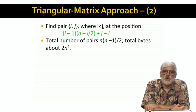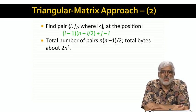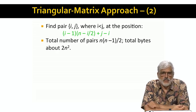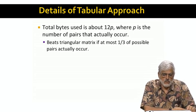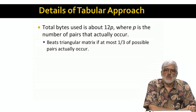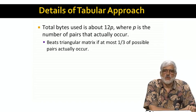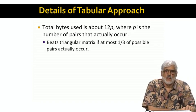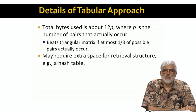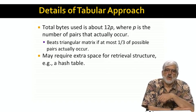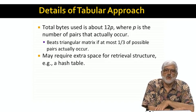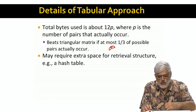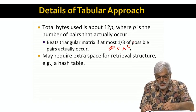The total number of pairs that are represented as n choose two are about n squared over two. And we use four bytes per pair, so the number of bytes needed is about two n squared. If we use a table of existing pairs, then we need space 12p for the triples, where p is the number of pairs that occur in the data. As we mentioned, this amount of space is less than that of the triangular matrix, as long as p is at most one-third of the possible pairs, or about p less than n squared over six.